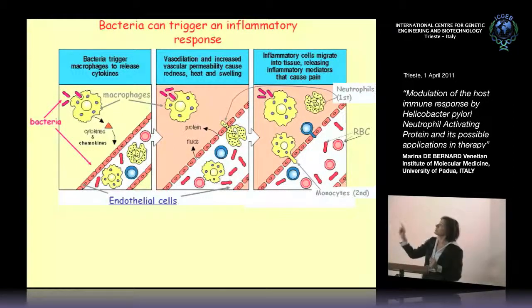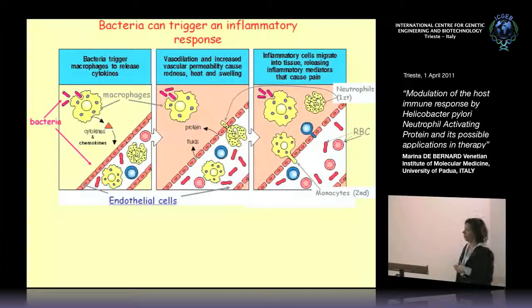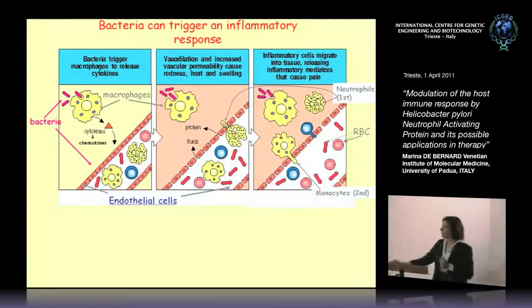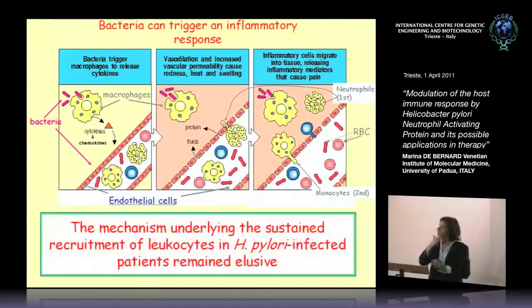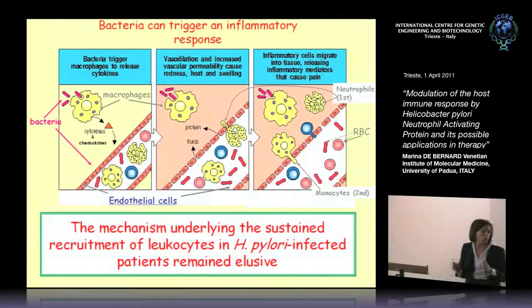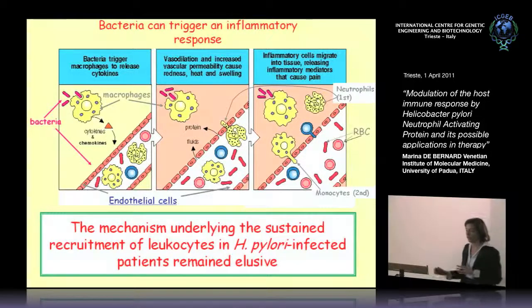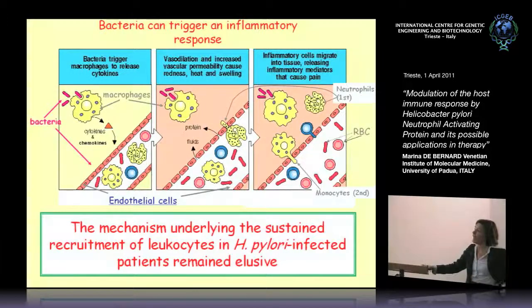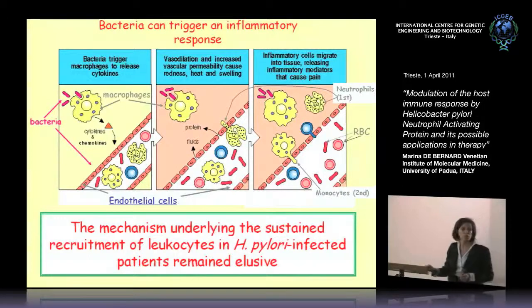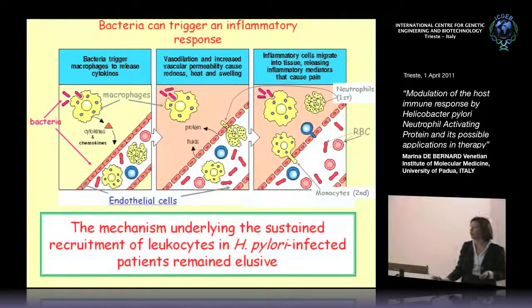During this process, the first cells which go out from the blood are neutrophils and the second ones are monocytes. This process obviously occurs also during the inflammation sustained by Helicobacter pylori. However, the mechanism underlying the sustained recruitment of leukocytes in H. pylori infected patients remained elusive.